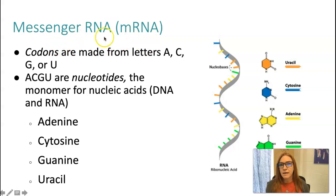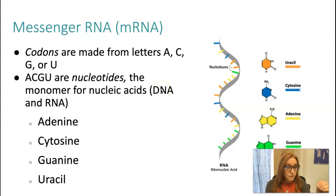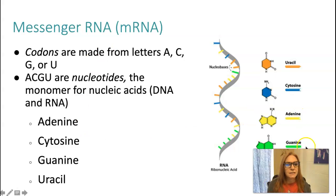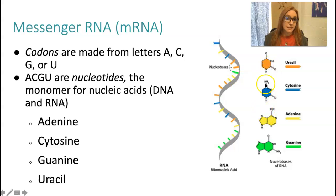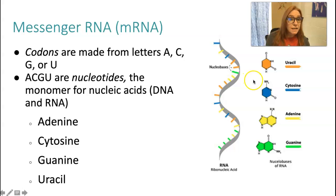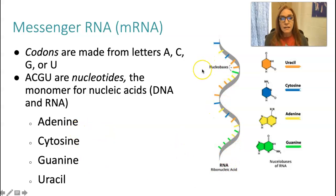Messenger RNA's job is to keep the DNA safe in the nucleus by traveling between the DNA and the ribosome — one way, only out — and it translates the code from DNA. Its codons are made from the letters A, C, G, and U — adenine, cytosine, guanine, and uracil. Those are the nucleotides, the monomers for all nucleic acids. These make up those codons, and they tell the ribosome which amino acids to put in which place to build a protein that functions and folds properly.